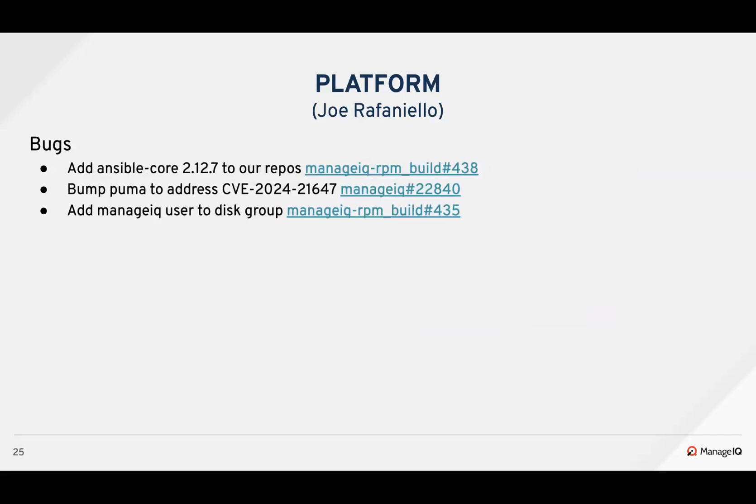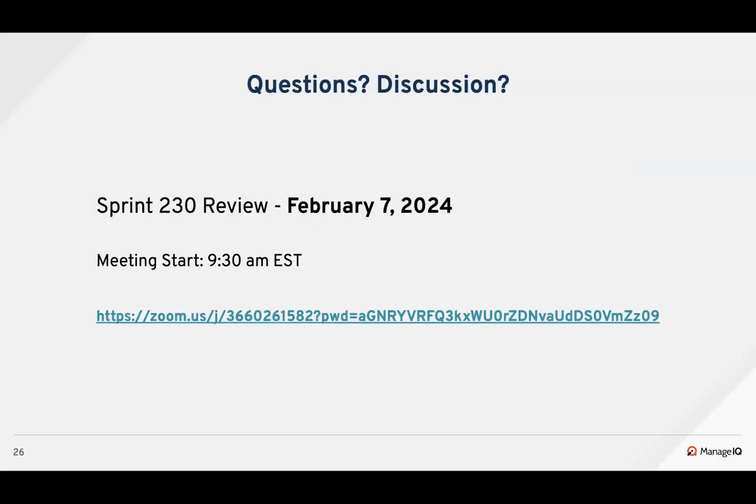For platform bugs, Brandon added Ansible Core 2.12.7 since it was removed from the CentOS repos. The Puma version was bumped to address a CVE. The manageiq user was added to the disk group to allow iSCSI smart state scans, since previously the system was running as root and now runs as manageiq, making this step necessary.